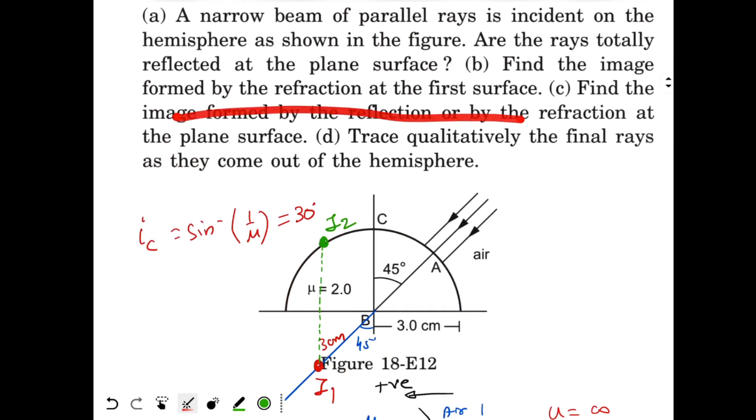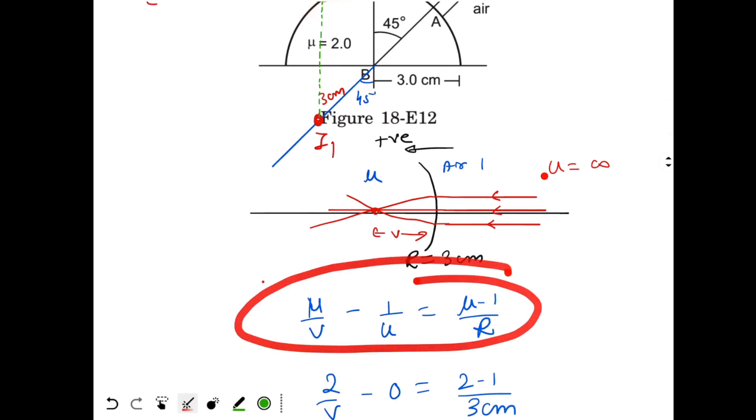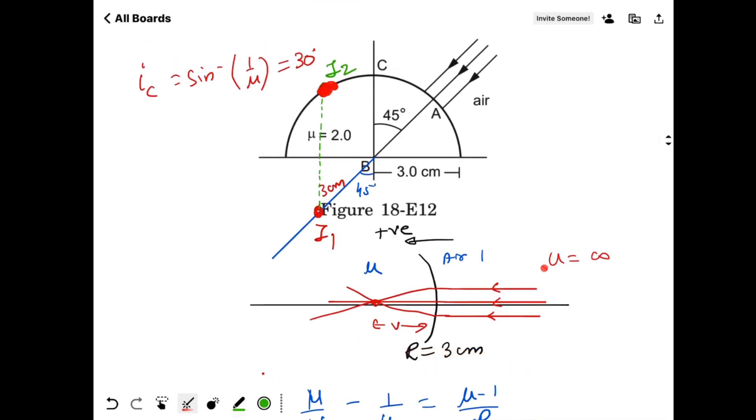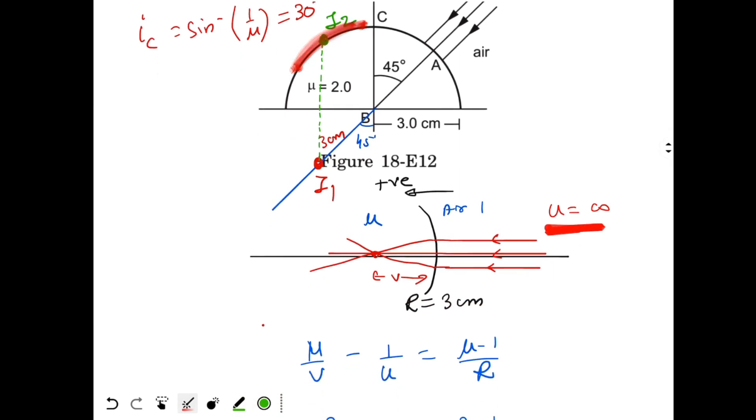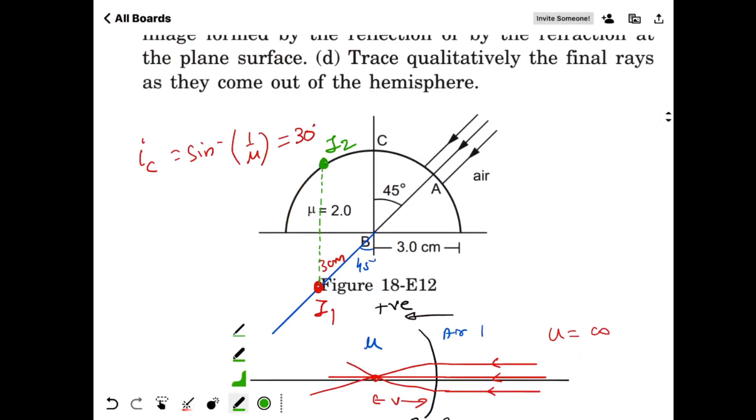Find the image formed by the reflection or by refraction at the plane surface. So this is 3 cm first image, also 3 cm from the center. Second image after reflection. Trace qualitatively the final rays as they come out of the hemisphere. Now for this final surface, since the image is lying exactly on the surface, if we use this formula, U is 0 for this image. This image is now acting as an object for the spherical refracting surface. U is 0 means V should also be 0. So the final rays will come out directly from this point.